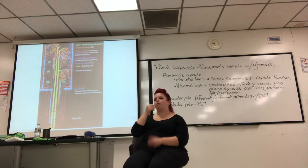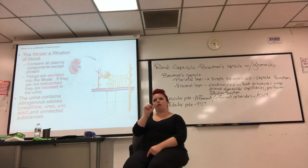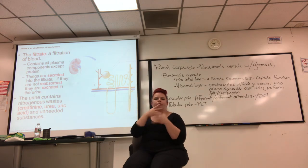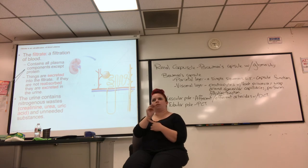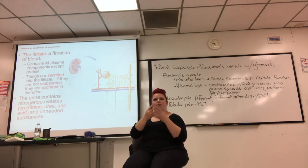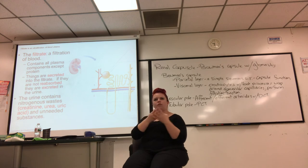Let's go back to renal corpuscle and filtration. Filtrate is the filtration of blood — specifically blood plasma; you don't filter the hematocrit. Filtrate contains all plasma components except proteins, because proteins are too big to make it through the filter. Things are secreted into the filtrate, and if they're not reabsorbed, they're excreted.